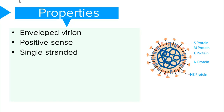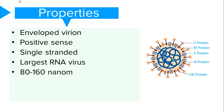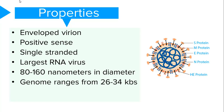The coronaviruses are the largest members of the RNA viruses, with a diameter of about 80 to 160 nanometers. The genome is 34 kilobases, and these viruses have 5 structural proteins that have been discovered.